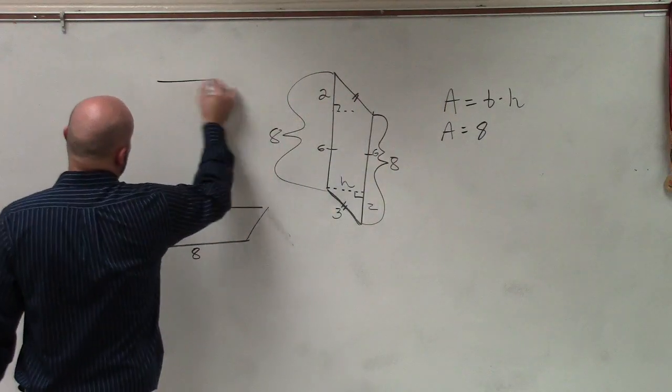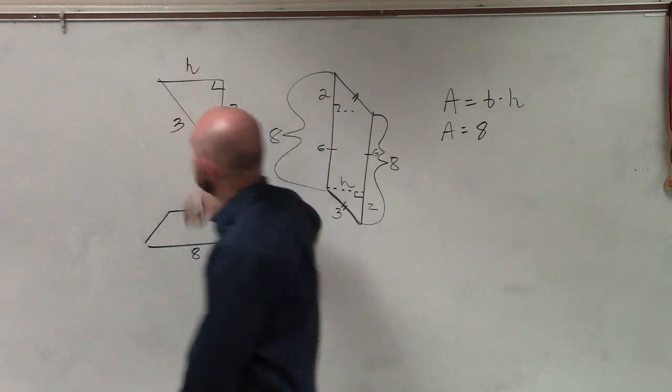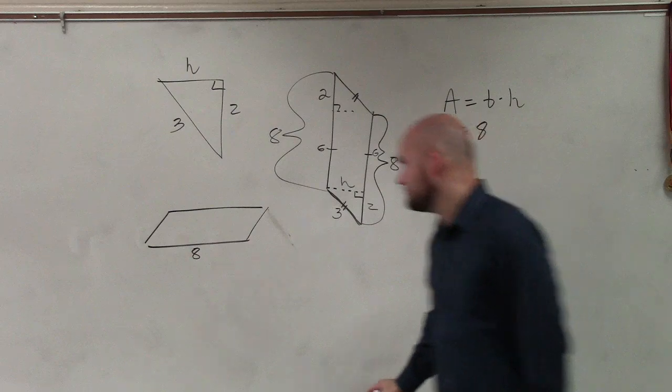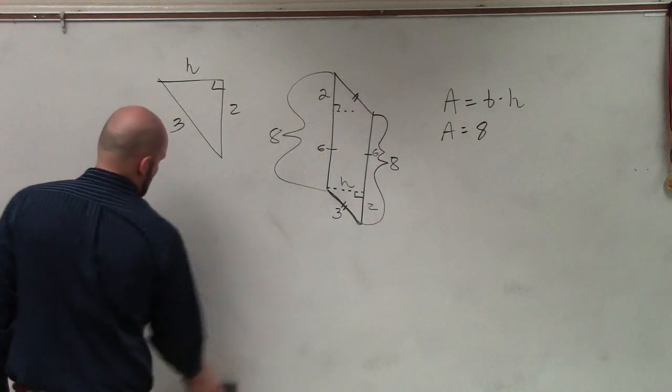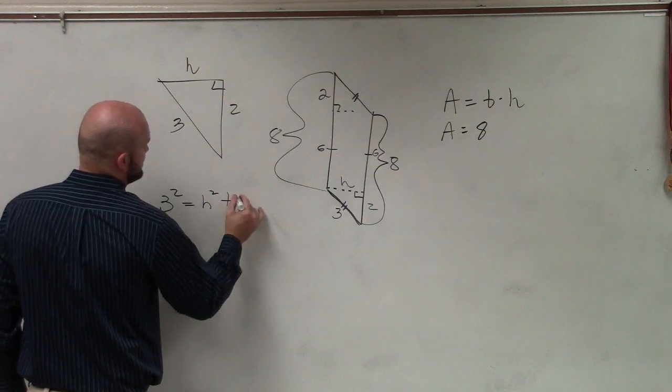Now, what have we learned besides special right triangles? The Pythagorean theorem. Is it possible for me, with that given information, to figure out what h is? Yeah, of course it is. So, you could say three squared equals h squared plus two squared.